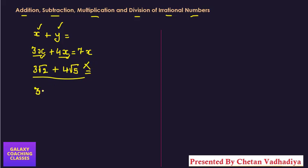But if instead of this, they would have given us 3√2 plus 4√2, then you can add them. That will be 7√2. Understand?